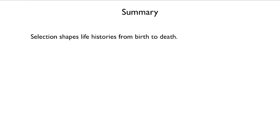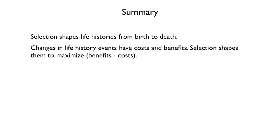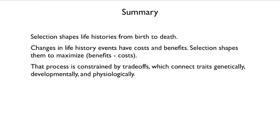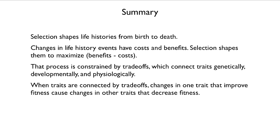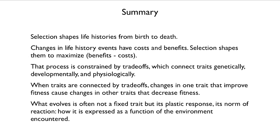To summarize: selection shapes life histories from birth to death. Changes in life history events have costs and benefits, and selection acts to maximize the cost-benefit relationship. That process is constrained by trade-offs, which connect traits genetically, developmentally, and physiologically. When traits are connected by trade-offs, trying to change one to improve fitness causes a change in another that decreases fitness. What evolves is often not a fixed trait, but its plastic response — the reaction norm — describing how it is expressed as a function of the environment encountered.